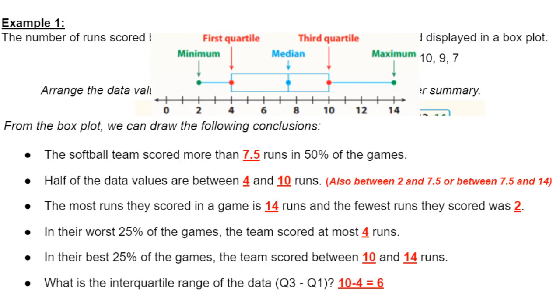The most runs scored in a game was 14, and the fewest scored was two - that's the minimum and the maximum. In their worst 25% of the games, so that's that first quartile, the team scored at most four runs. In their best 25% of the games, they scored between 10 and 14. And then we have this new phrase here, interquartile range. The interquartile range is the difference between your third quartile and your first quartile. So 10 minus four, and that gives you six.